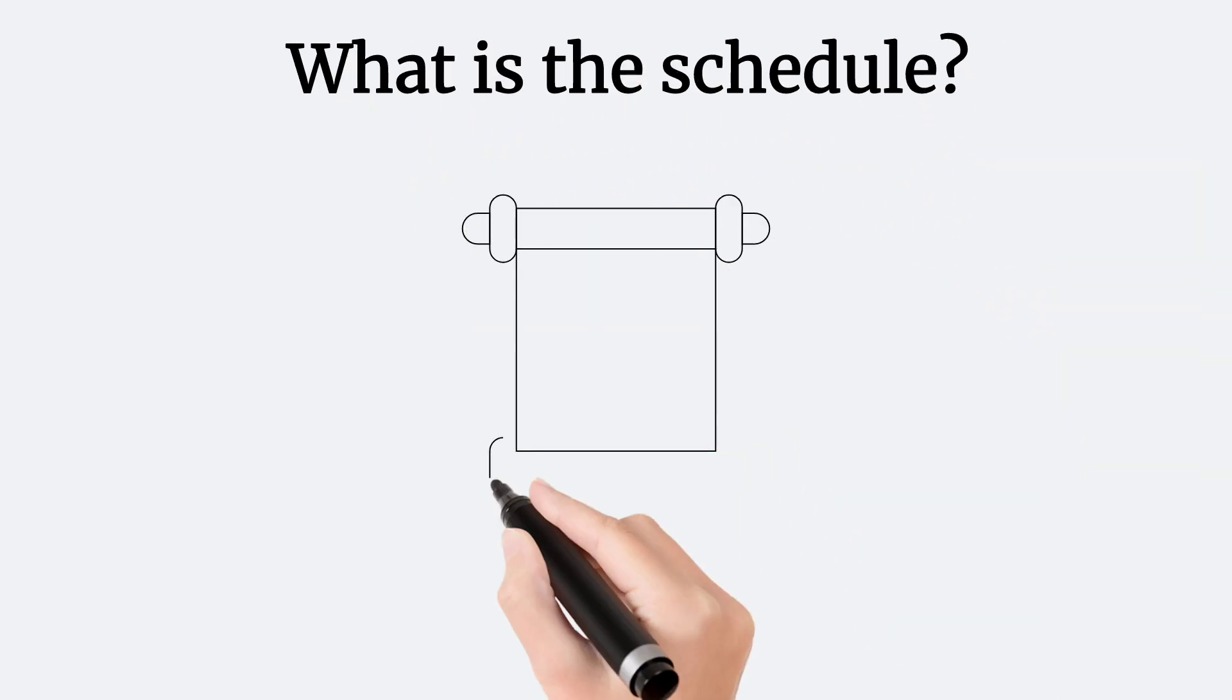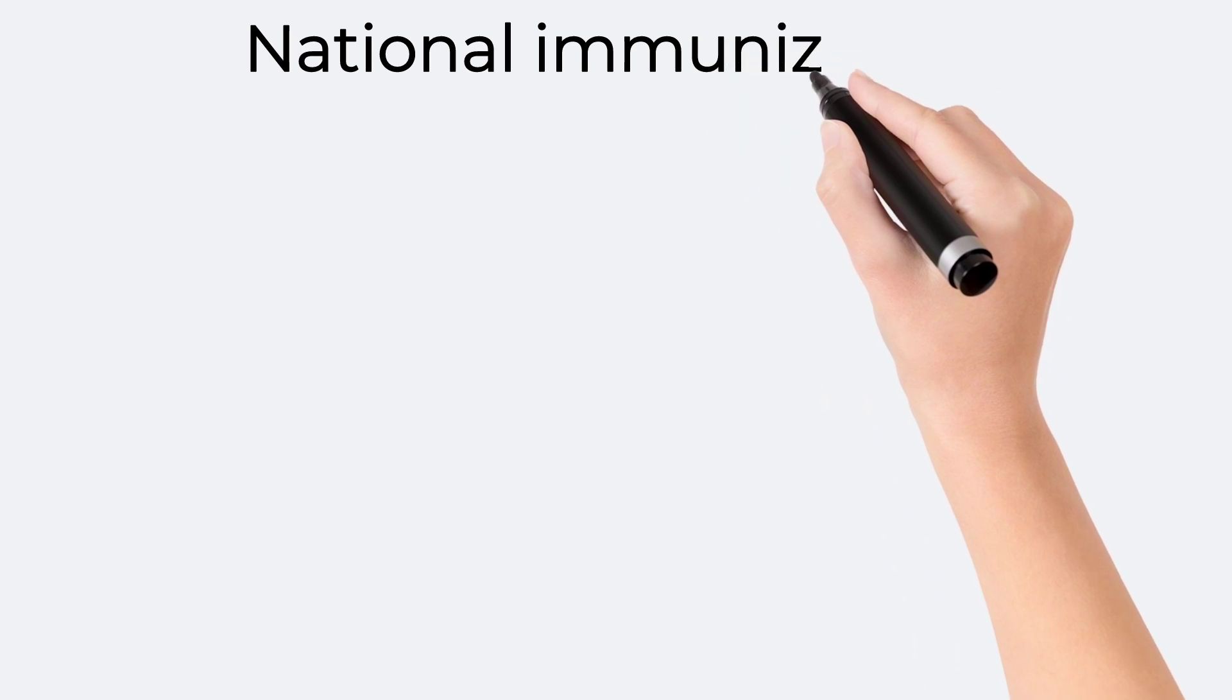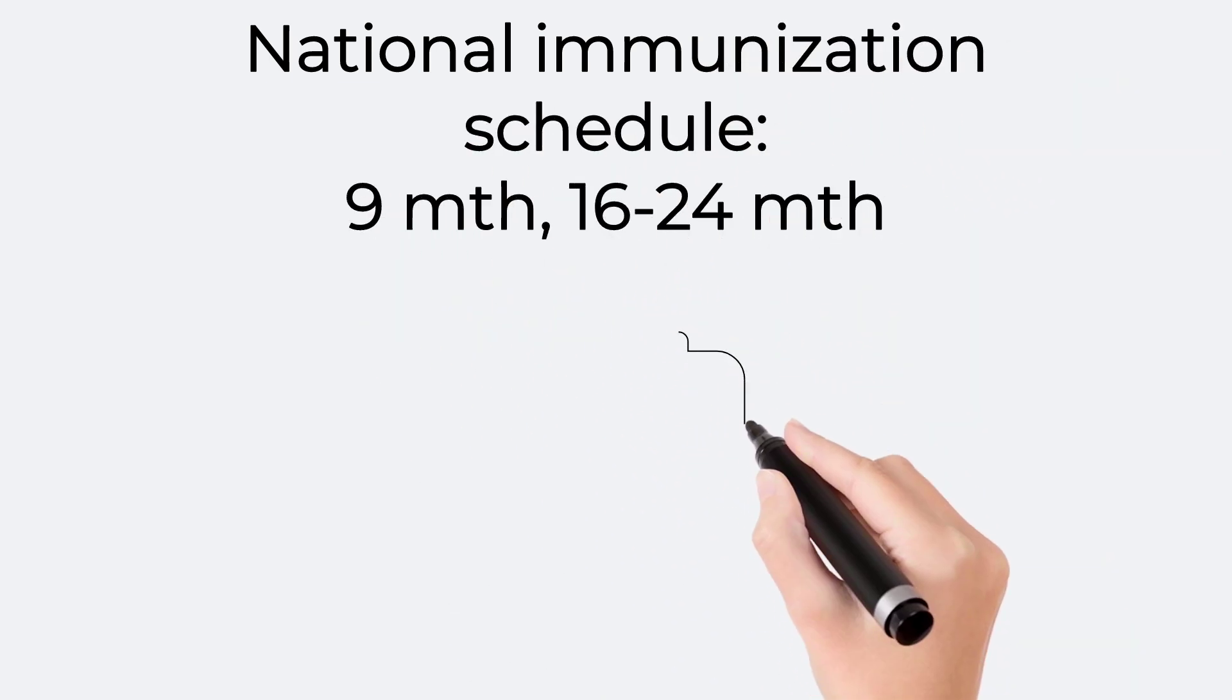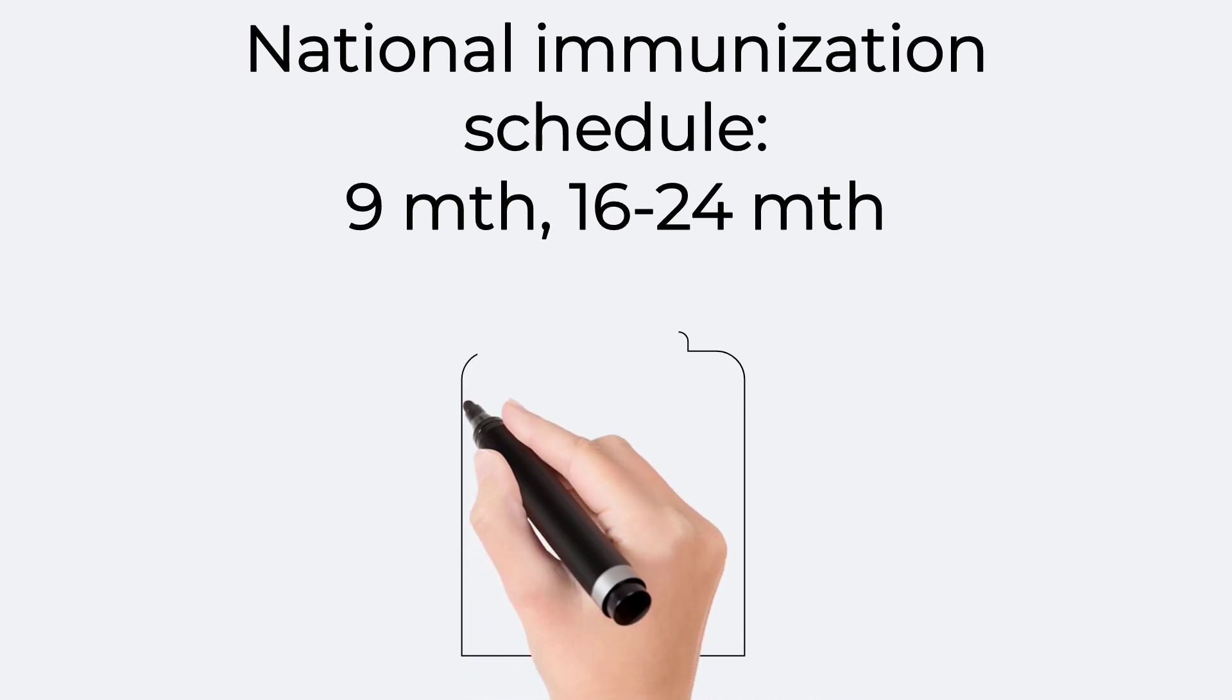What is the schedule for MMR vaccine? As per the National Immunization Schedule, measles-containing vaccine is recommended at 9 months and between 16 to 24 months of age.